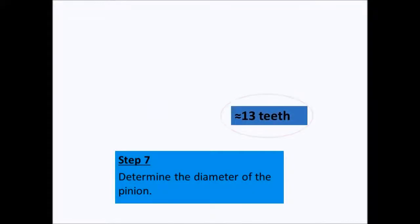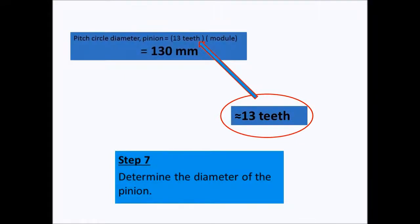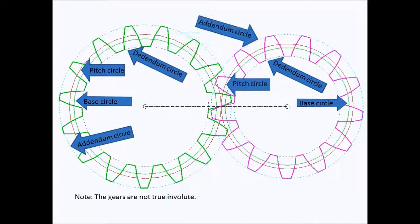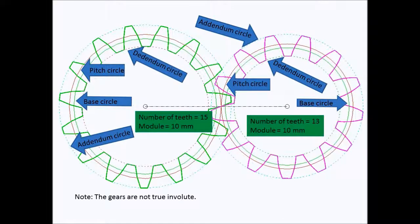The diameter of the pinion is 130 mm. With this we can show these two gears together. The problem involving the diameter and the number of teeth of the smallest pinion is now solved.